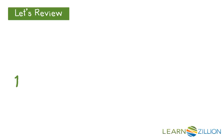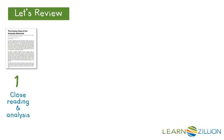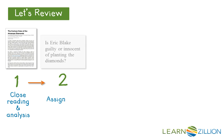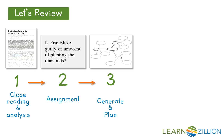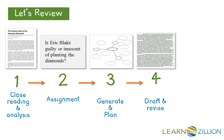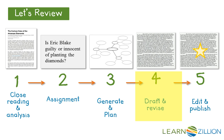Let's see where we're at in the writing process. We've done our close reading. We've looked at our prompt and know we're doing an argumentative essay. We've generated and planned our introduction, claim, and counterclaim. We've drafted and revised our introduction, claim, and counterclaim. And now we're ready to draft our conclusion. Of course, the process will end when we edit and publish.